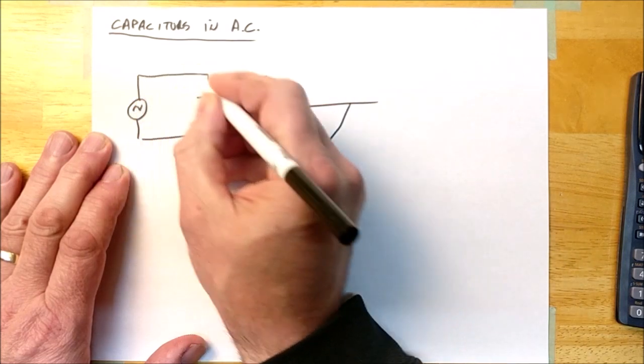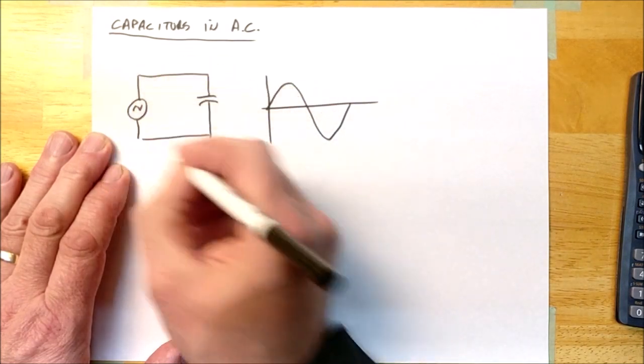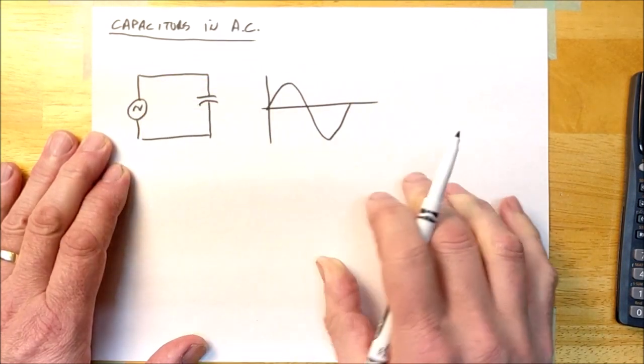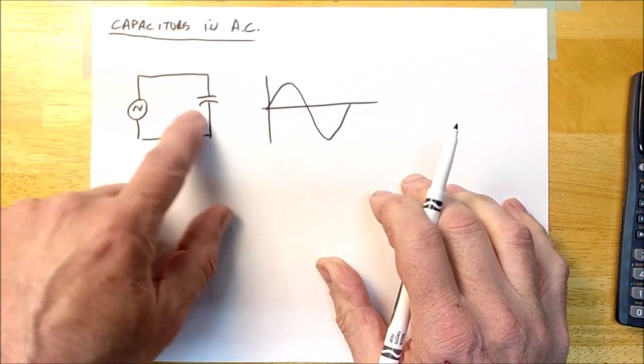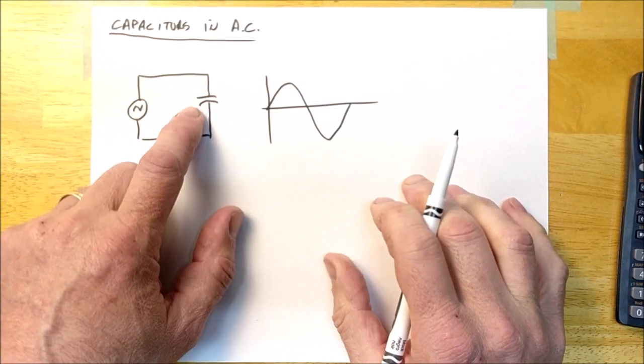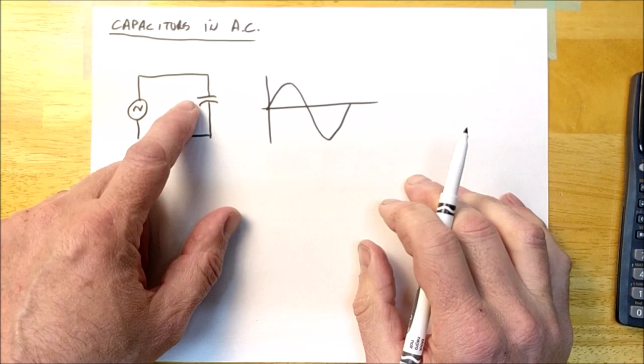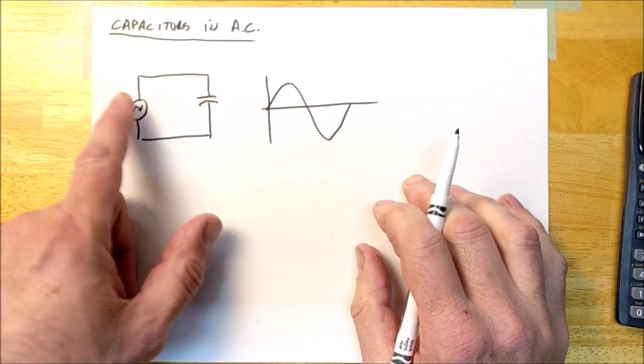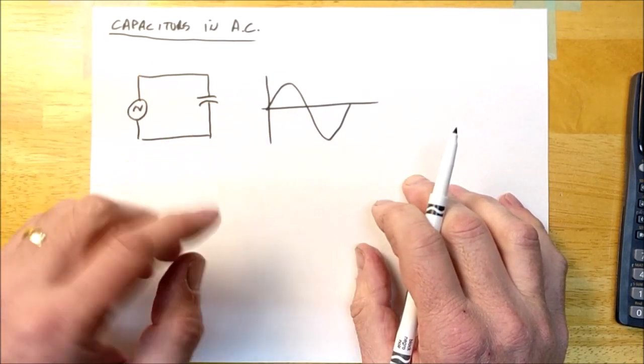So I've got this voltage trying to flow this way, and then this way, and this way, and this way. And what's actually occurring is this capacitor will constantly be charging and discharging because the voltage is continuously changing.